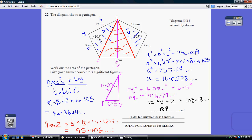Okay, so my area of these two triangles here is half times 12 times 8 times sin 105. So each of those is 46.36. So I've got two of those. Right, now I want to try and work out the area of this triangle.